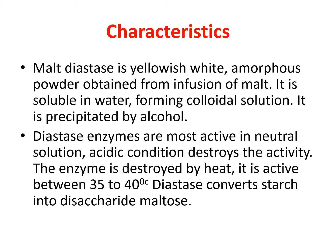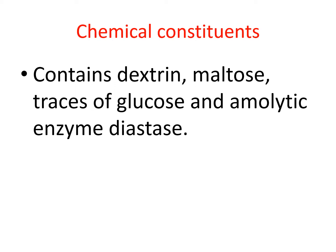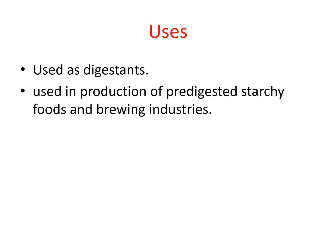Diastase converts starch into the disaccharide maltose. Chemically, it contains dextrin, maltose, traces of glucose, and the amylolytic enzyme diastase. Diastase is used as a digestant, in production of pre-digested starchy food, and in the brewing industry.